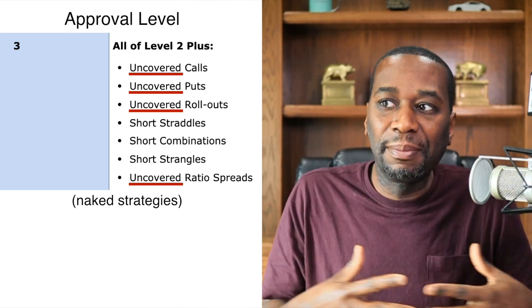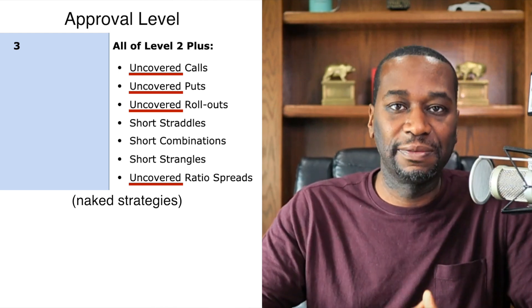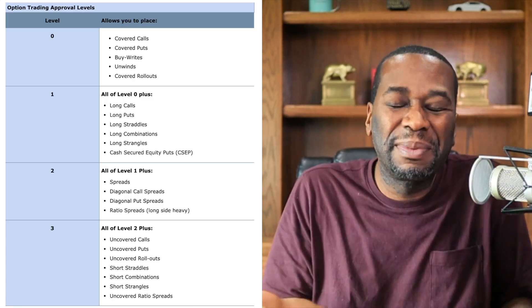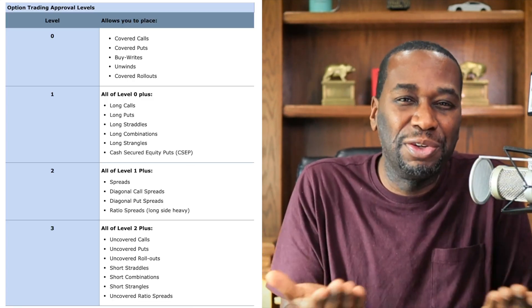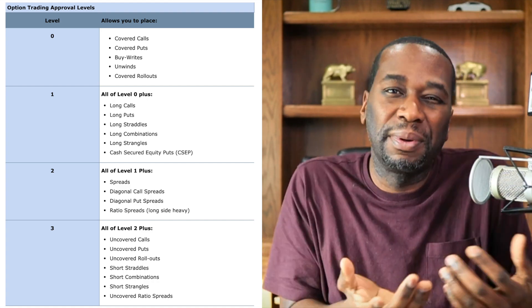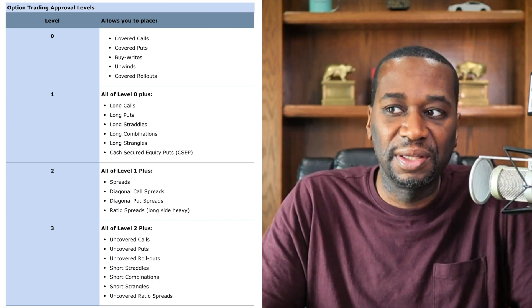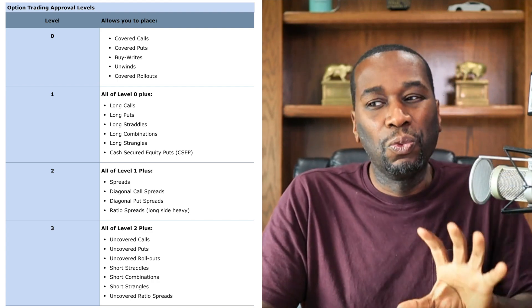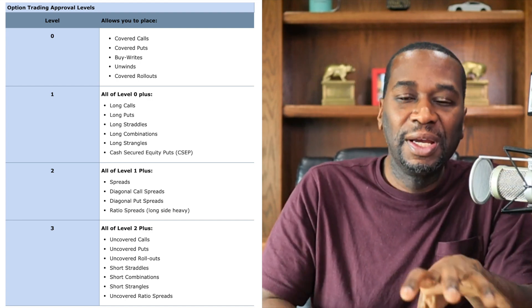At bare minimum everyone will get approved for level zero because it's the most safest position that you can be in where the broker will say 'hey, you can't really do any harm because you already own something and you're going to just be selling stuff against what you already own.'